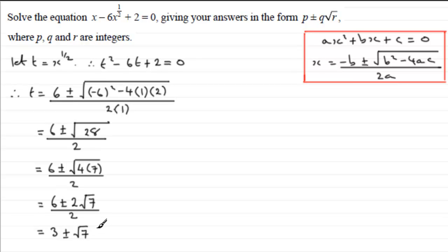So we've got 3 plus or minus root 7. Okay, well that is t, we've got to get what x is. So t is x to the power half, so to get what x is I've got to square this result. So therefore what we have is x is going to equal 3 plus root 7 squared.